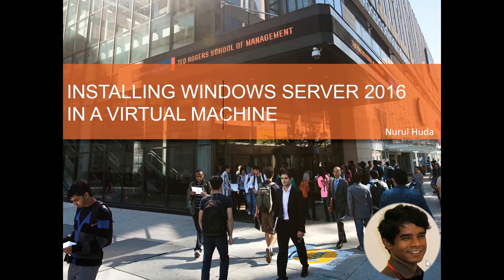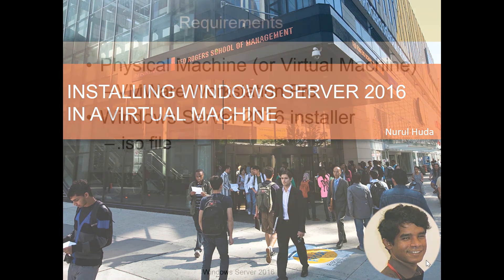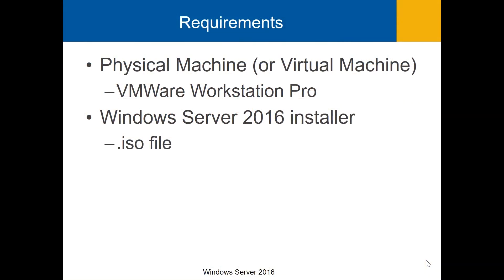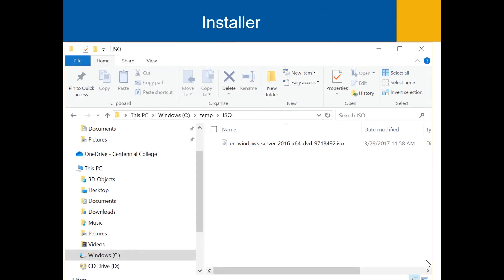In this video I'm going to show you how to install Windows Server 2016 in a virtual machine. To install Windows Server 2016 you will need a physical machine or a virtual machine and a Windows Server 2016 installation CD or an ISO image. I have VMware Workstation Pro 15 where I will create a virtual machine, and I also have downloaded the Windows Server 2016 installation ISO image.